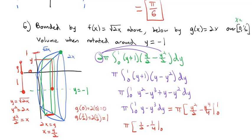Integrating: π · [y²/2 − y⁴/4] from 0 to 1 = π · (1/2 − 1/4) = π/4 cubic units for the volume of that shape when rotated around y = −1.